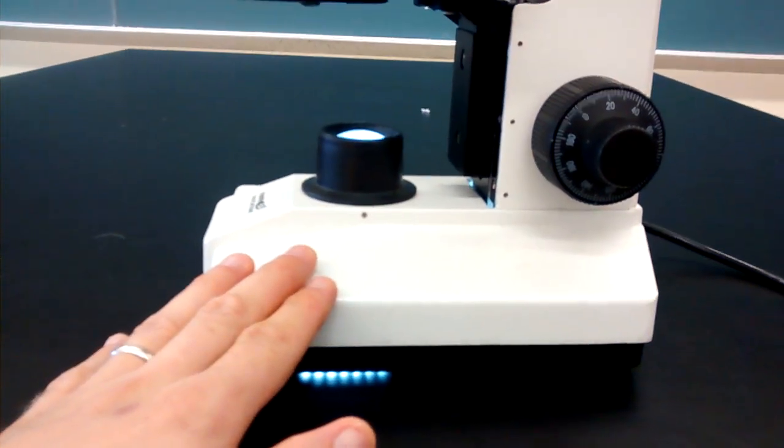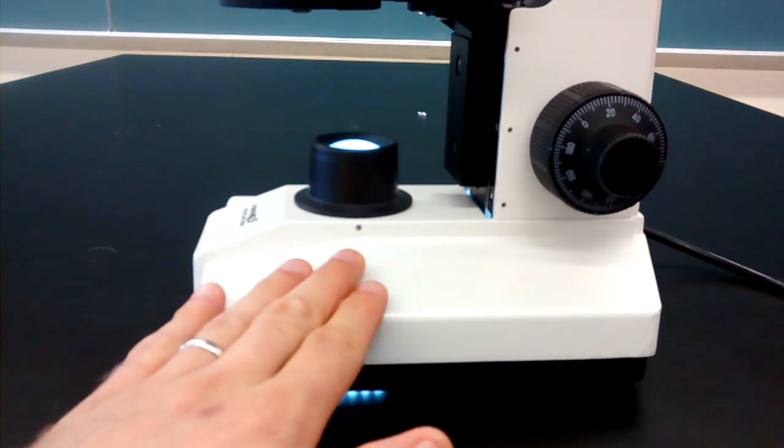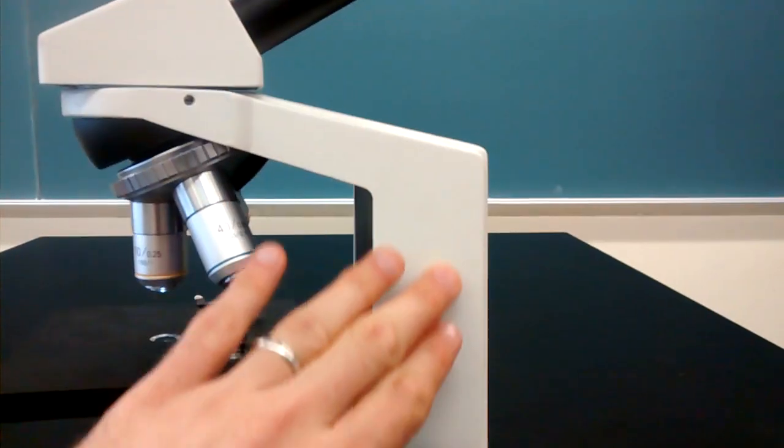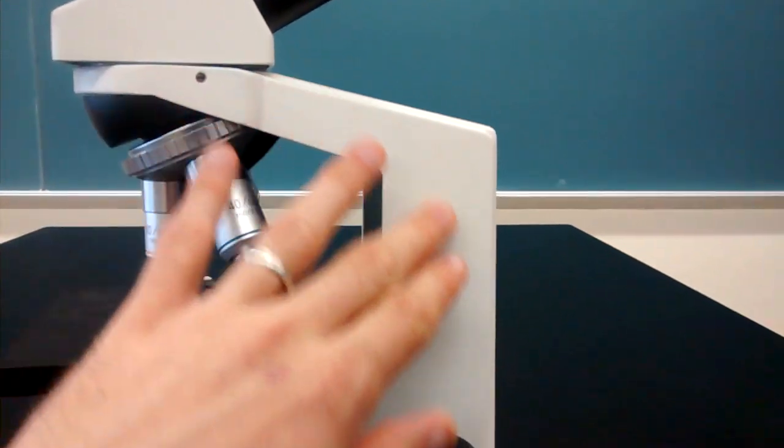Underneath that is the base of the microscope. Whenever you hold a microscope, you hold it by one hand underneath the base. And one hand holds this portion here, which is called the arm of the microscope.